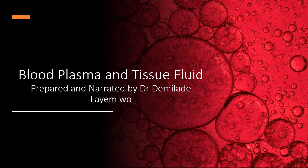We are currently doing transport in mammals, discussing how blood is transported around the body and which blood vessels are responsible for that. In this video, I will mainly introduce you to blood plasma and tissue fluid, and also discuss how hemoglobin is able to transport oxygen around the body, as well as the factors that affect that transportation of oxygen.